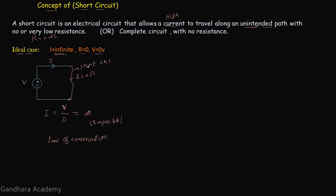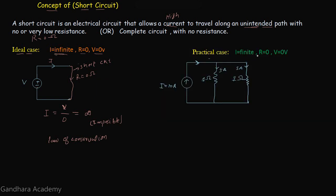Now let's take the practical case of a short circuit. For the practical case, the resistance of a short circuit is equal to zero ohms and the voltage across a short circuit is also zero volts — both the same as the ideal case. However, in the practical case the current through a short circuit will be finite, whereas for the ideal case the current is infinite.